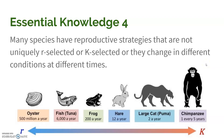Not everything is either an R or K — it exists more on a spectrum. They can be a really extreme R species, or a really extreme K species, or somewhere in the middle. There are also certain species that might behave more like an R under great conditions, or more like a K when conditions are not as favorable.